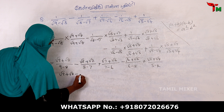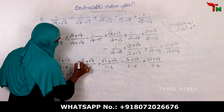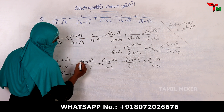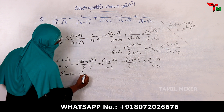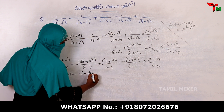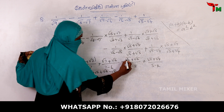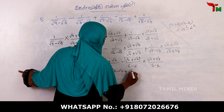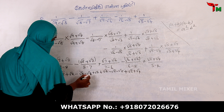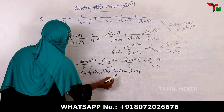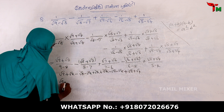The numerators telescope: root 9 minus root 8, plus root 8 minus root 7, plus root 7 minus root 6, plus root 6 minus root 5, plus root 5 minus root 4. The intermediate terms cancel, leaving root 9 plus root 4.